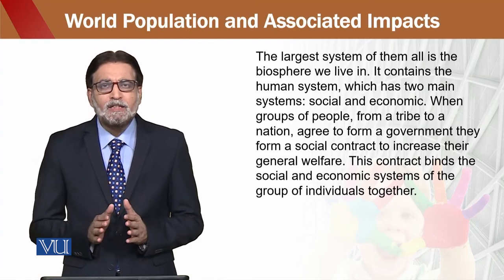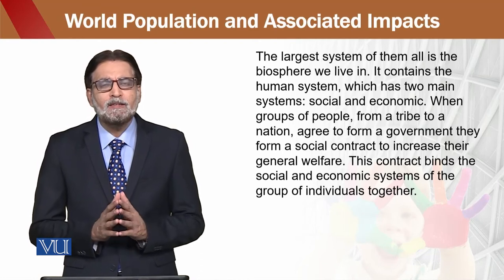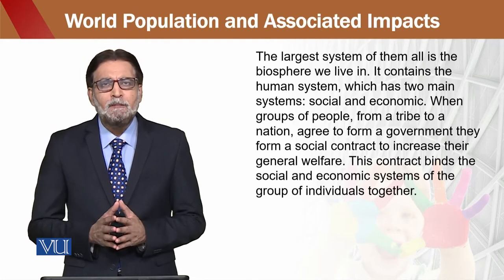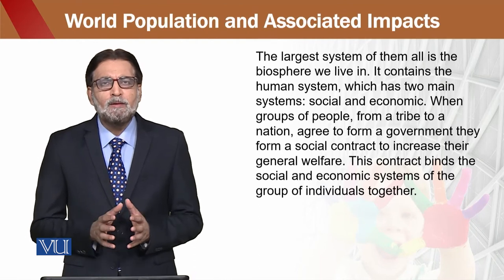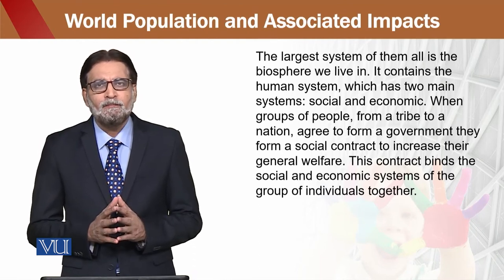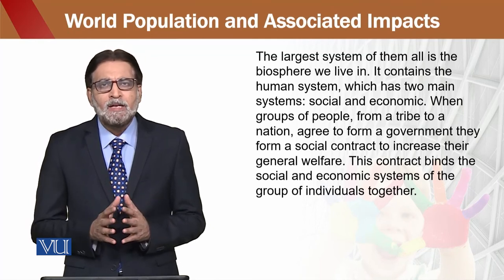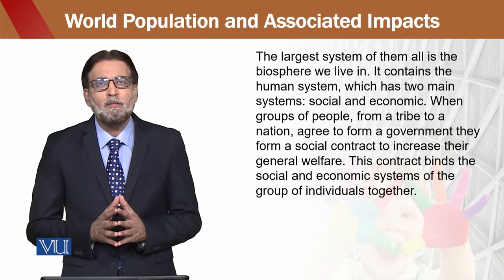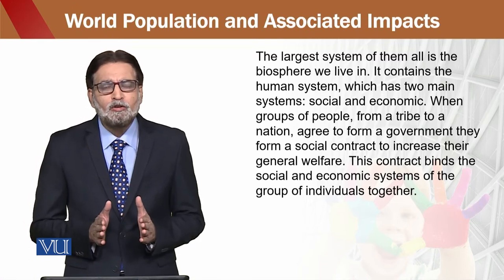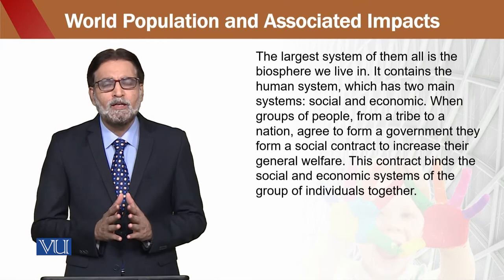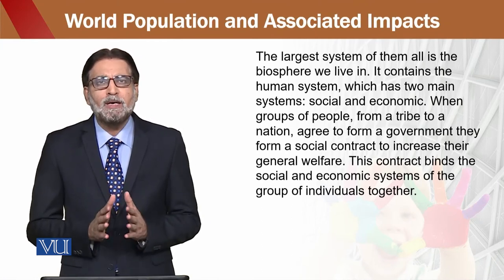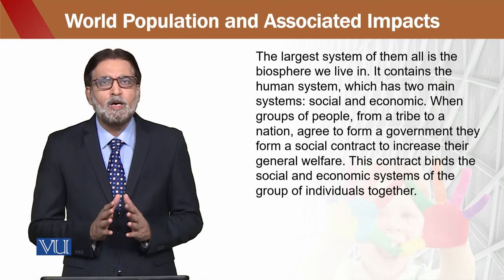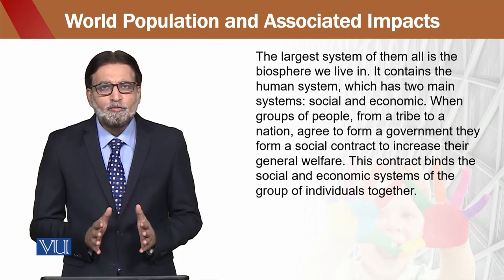तो इससे हमें अंदाज़ा हुआ कि पहले number पे जो हमारा problem है, वो social का है — society का. कि जब हम tribal area से जाके urban areas में आएंगे, तो हमारے urban area के resources जो हैं, वो उसके मुताबिक upset हो जाएंगे. फिर resource allocation की भी बात है — कि जहां पे हमने resources allocate की हैं, और वहां से लोग shift हो के urban areas में आएंगे, वो भी हमारे लिए problem create करेगा. तो population growth का पहला impact है — social. इस social impact को control करना है, और वो control यह है कि urban area पे बढ़ता हुआ जो बोझ है, उसको कम करना है.